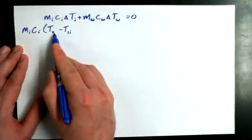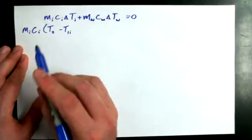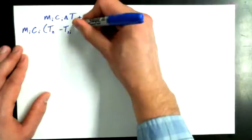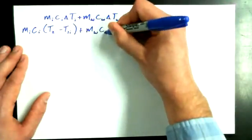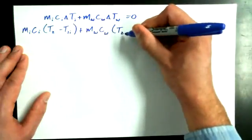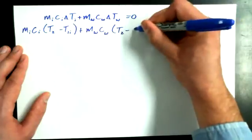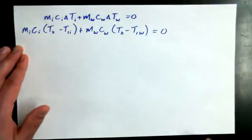Notice I didn't say T2 iron, because we said earlier that T2 and T2 iron and T2 water are all going to be the same. So I'm making that simplification right away. Plus mass of water times the heat capacity of water times T2, really of water, but I'm just going to call it T2, minus T1 for water, is all equal to zero.